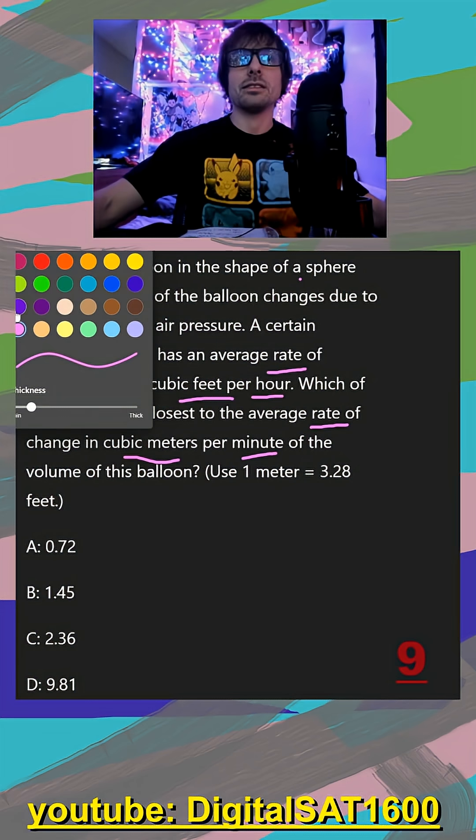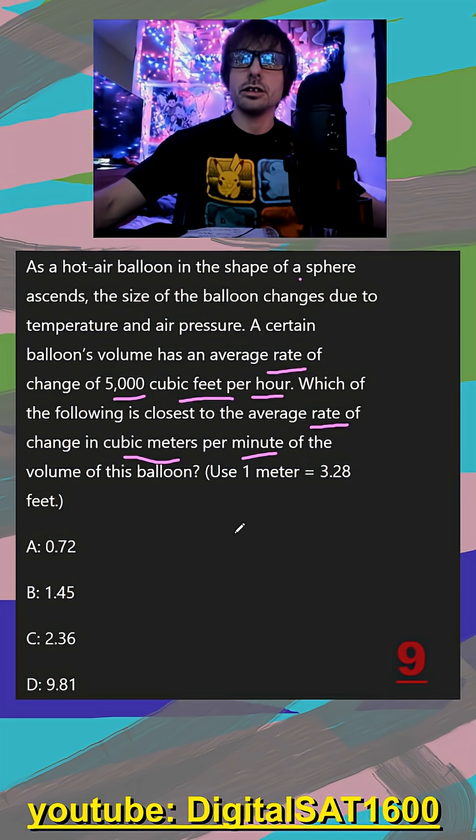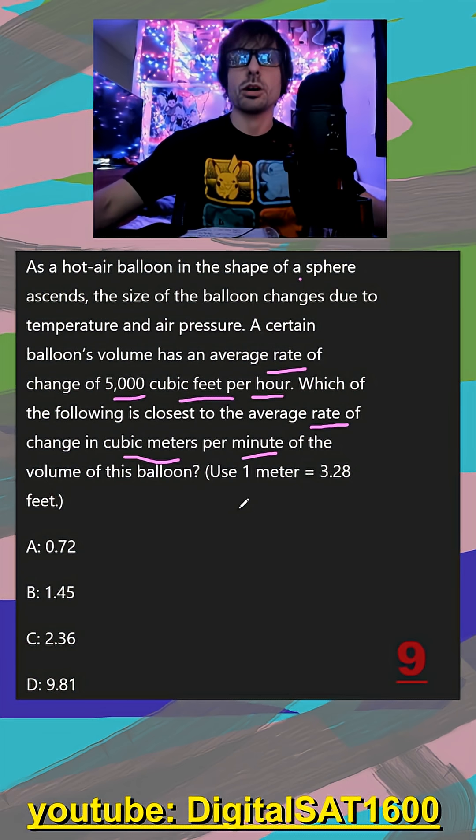So it starts off sounding like we're in a physics class, but it does turn into just a basic unit conversion problem. With these, you always start with your initial rate, so we'll do 5,000 feet cubed divided by one hour.